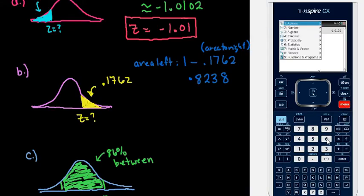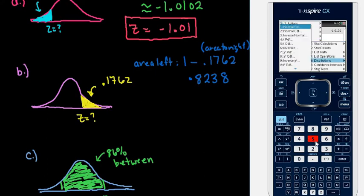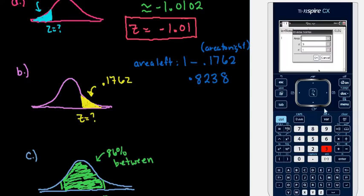So then we would select menu, option 6, statistics, and then option 5, distributions, and again, option 3, the inverse norm.